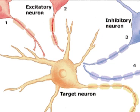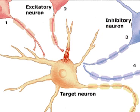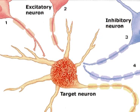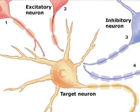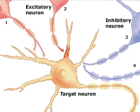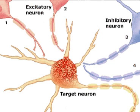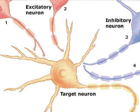An action potential, represented by red dots, propagates along the axon of neuron 2, leading to an excitatory postsynaptic potential in the target cell. The depolarization spreads passively within the target cell until it reaches the axon hillock. Since the depolarization is lower than the excitation threshold, an action potential is not generated, and resting potential is resumed.